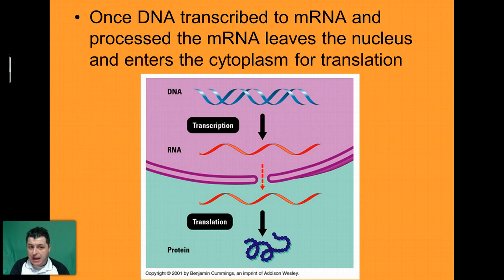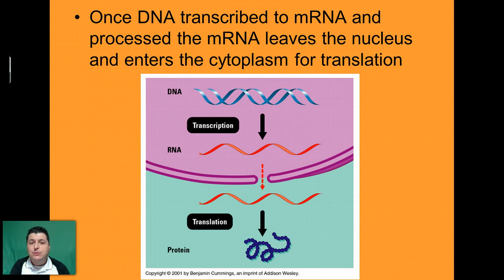Once DNA is transcribed into messenger RNA, it has to be processed. There are non-coding portions of the DNA — basically DNA junk — that have to be excised before it can be used in the next step of protein synthesis. There are a lot of additional components that we'll leave for another time. Once the RNA has been processed, it leaves the nucleus and goes to the cytoplasm — to the ribosomes — so that it can be translated into proteins through the process of translation.